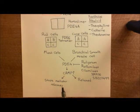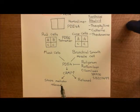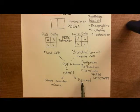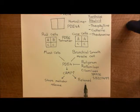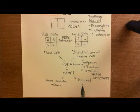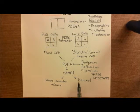Those mediators are what cause the immediate and the late phase of the asthmatic attack. In addition, the cyclic AMP going up in the bronchial smooth muscle cells is going to be pro-relaxant, and it's going to help keep these bronchial smooth muscle cells relaxed, even when they're being stimulated by histamine and cysteinyl leukotrienes.